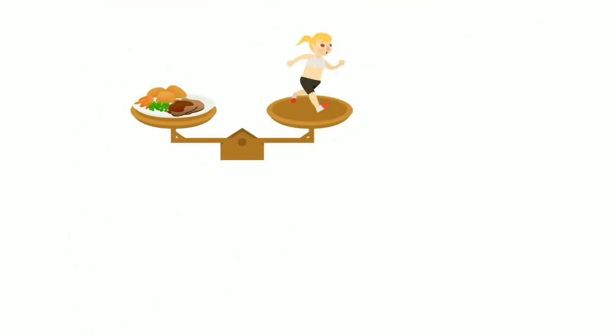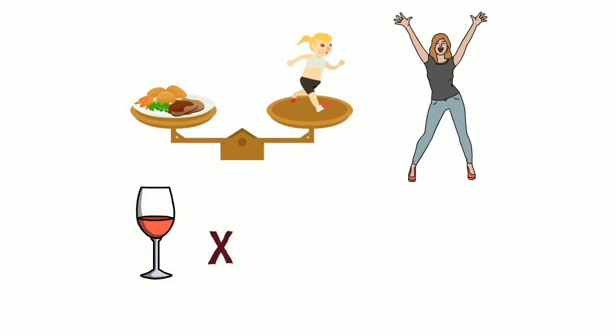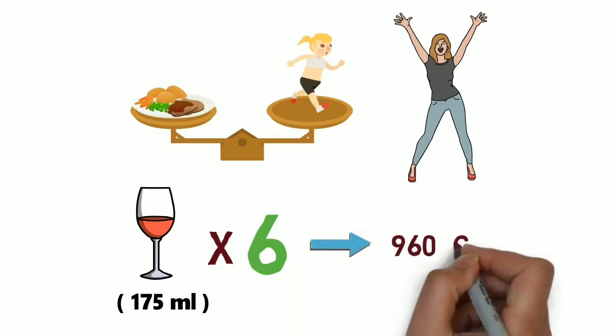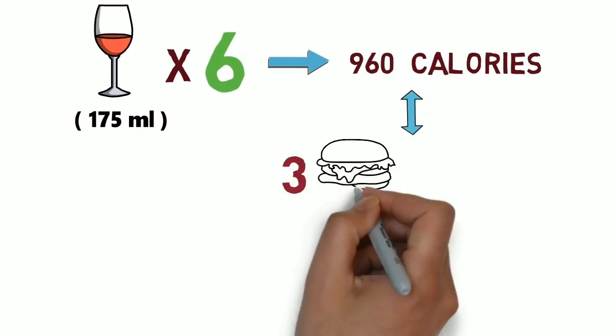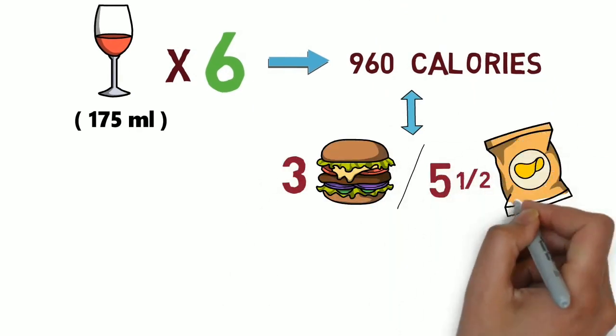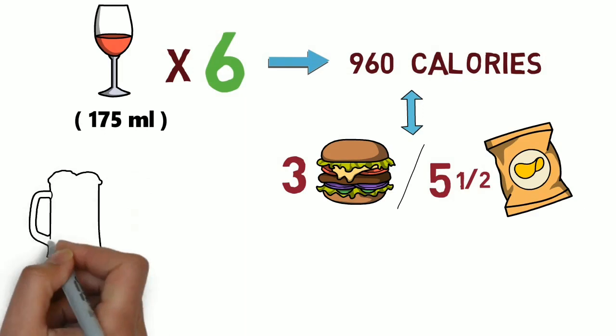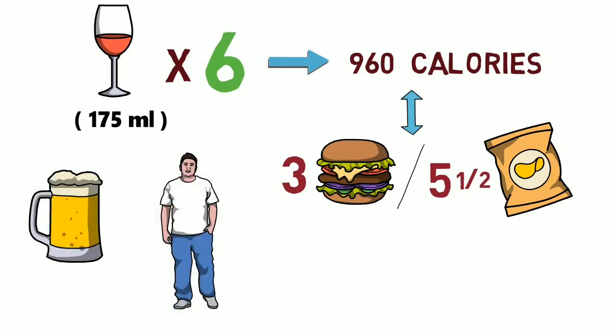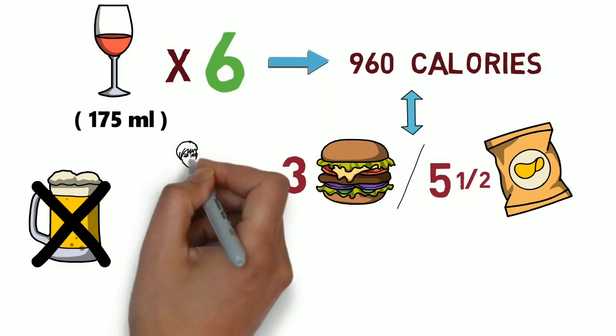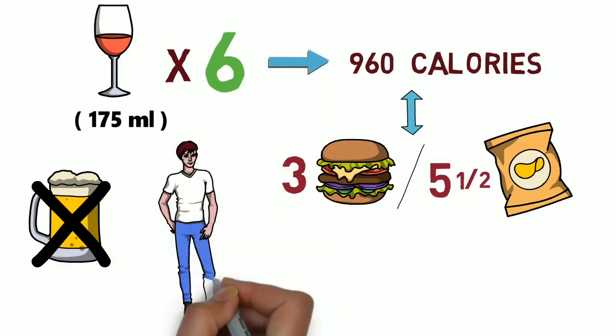Calories will also be saved. If you were to give up drinking 6 glasses of 175 ml wine a week, you would save around 960 calories, which is the equivalent to 3 burgers or 5 and a half bags of crisps. As calories in alcohol can cause you to gain weight, giving up alcohol can help you to reduce your weight.